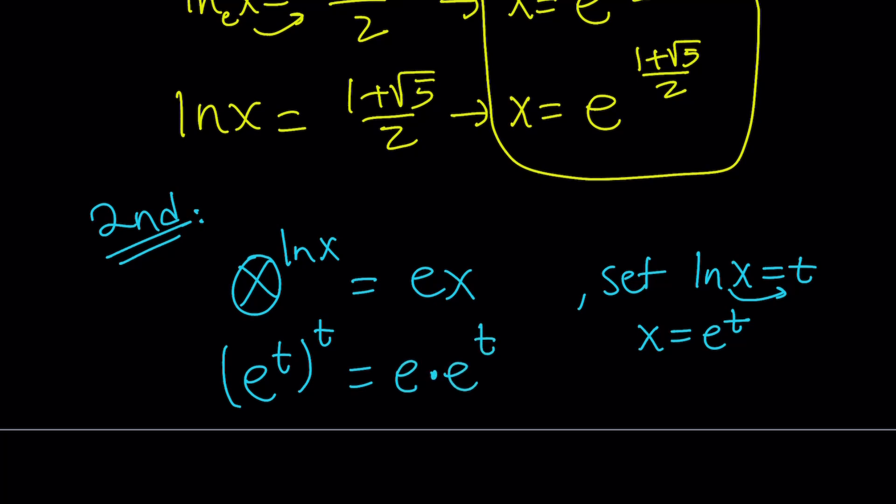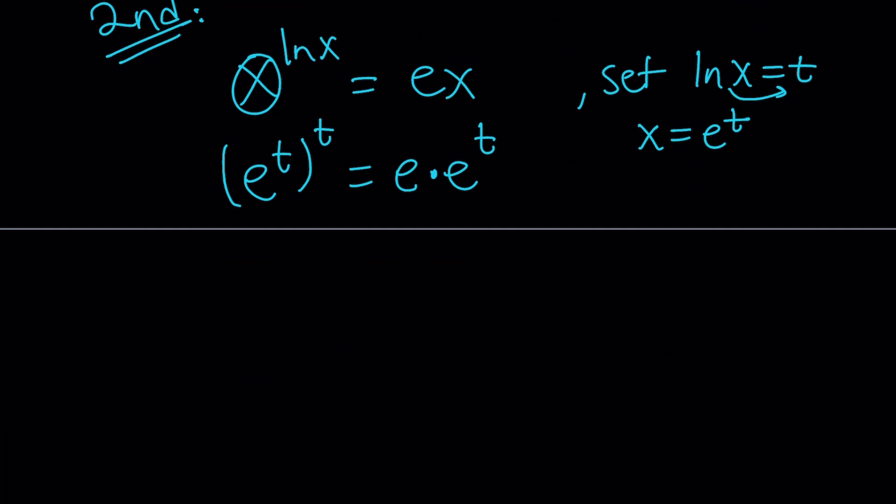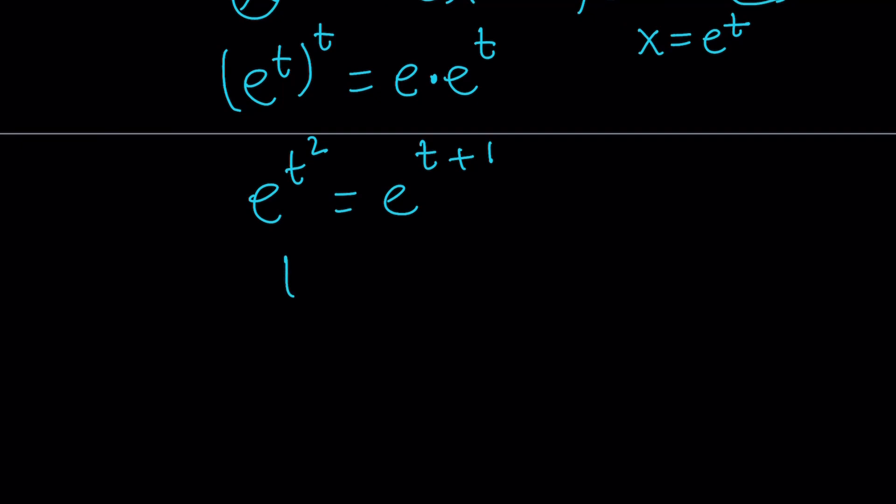And now here we can replace x with e to the power of t again. So we're basically multiplying two powers of e. And here it's power over power, so we multiply the powers or exponents. This becomes e to the power of t squared. And the right-hand side becomes e to the power of t plus 1. Now, the bases are equal, so are the exponents.